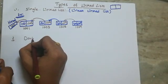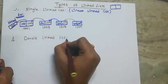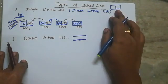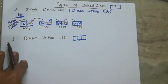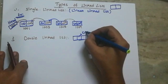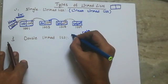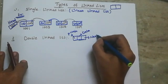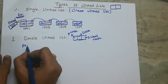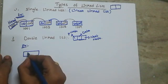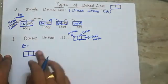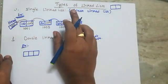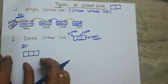Next one: double linked list. Double linked list is a variation of single linked list. In double linked list, every node compulsorily has three parts. We will have two address parts. Double linked list works with multiple links — two links — whereas single linked list works with only one link.